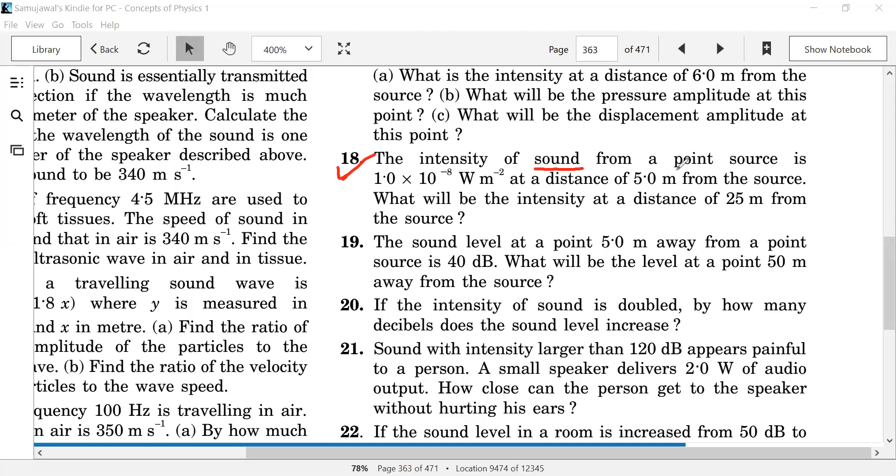Intensity of sound from a point source is 10 to the power minus 8 watt per meter square at a distance of 5 meters from the source. What will be the intensity at a distance of 25 meters from the source?